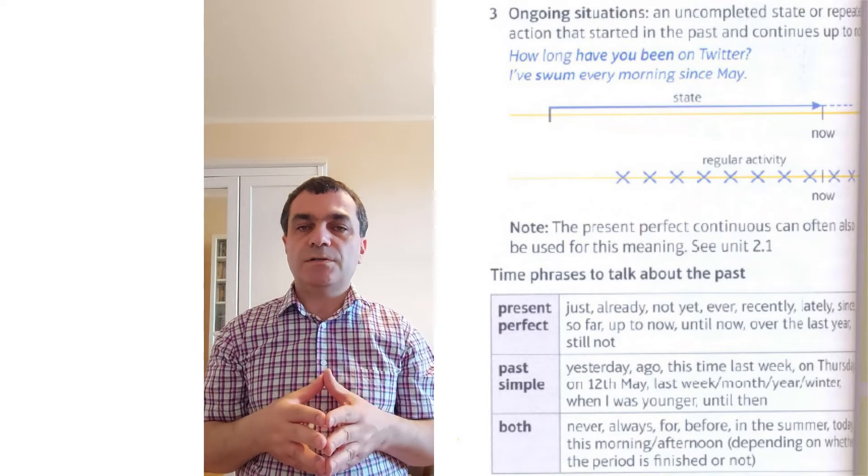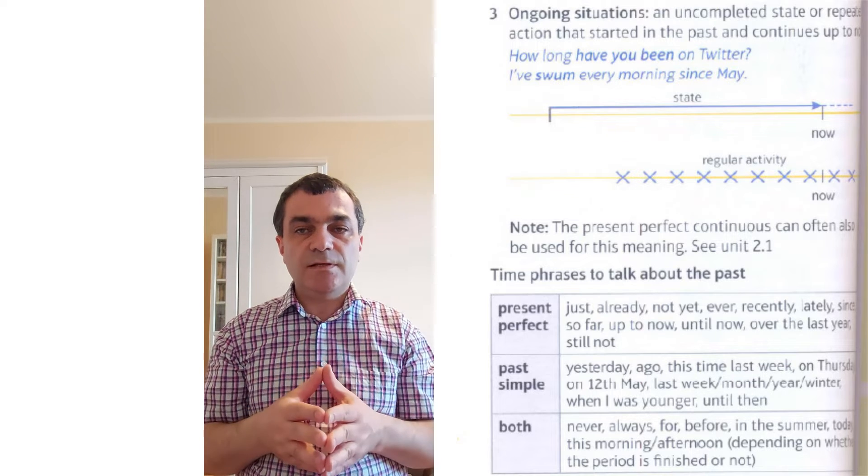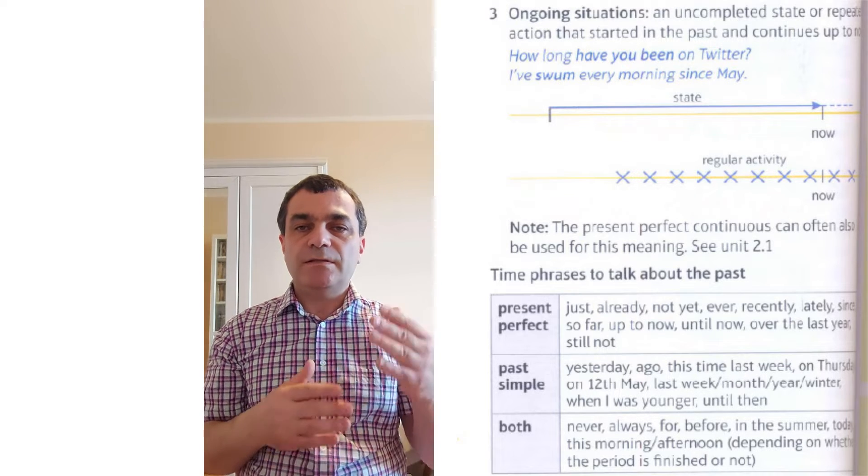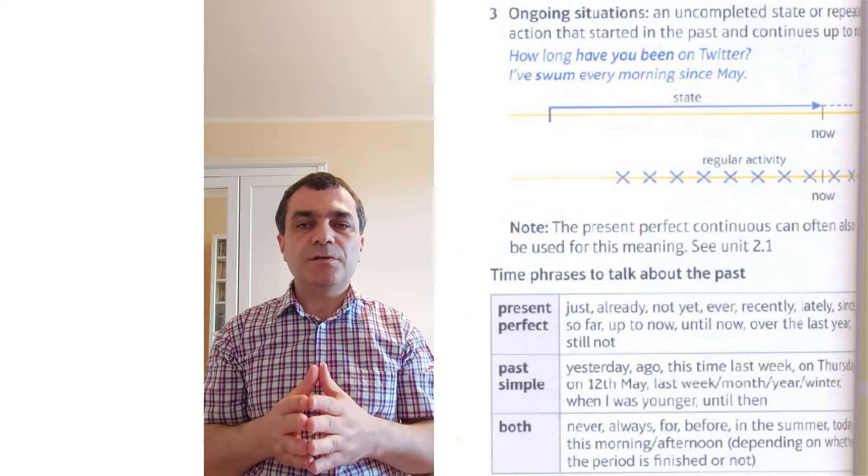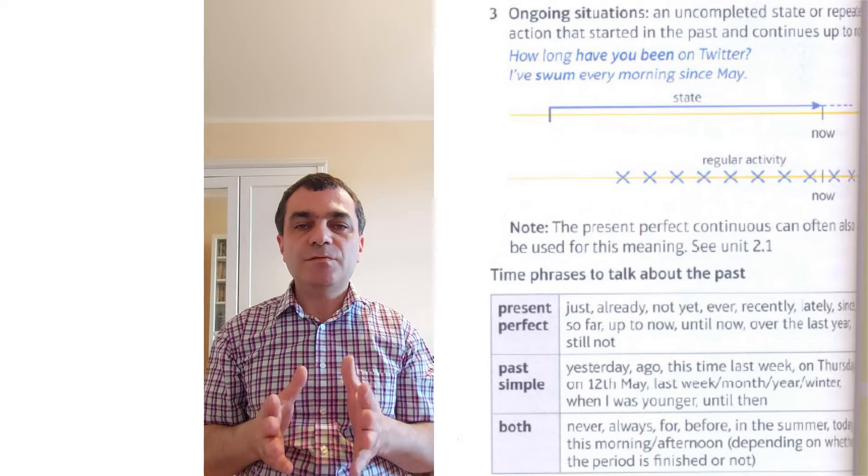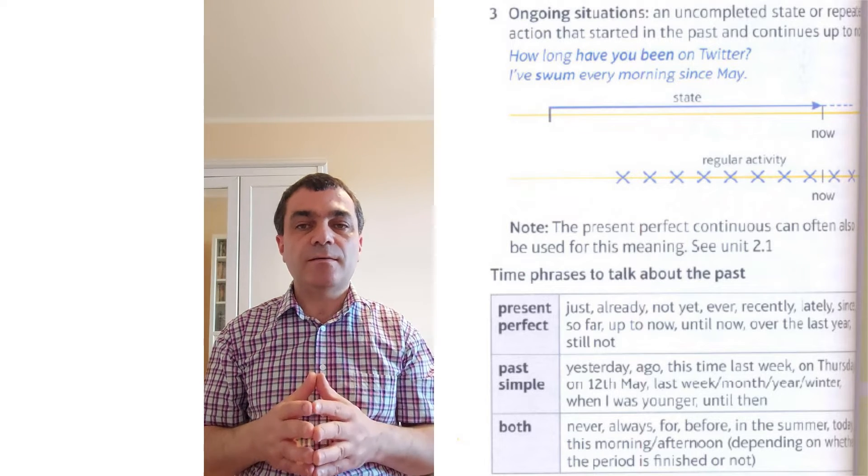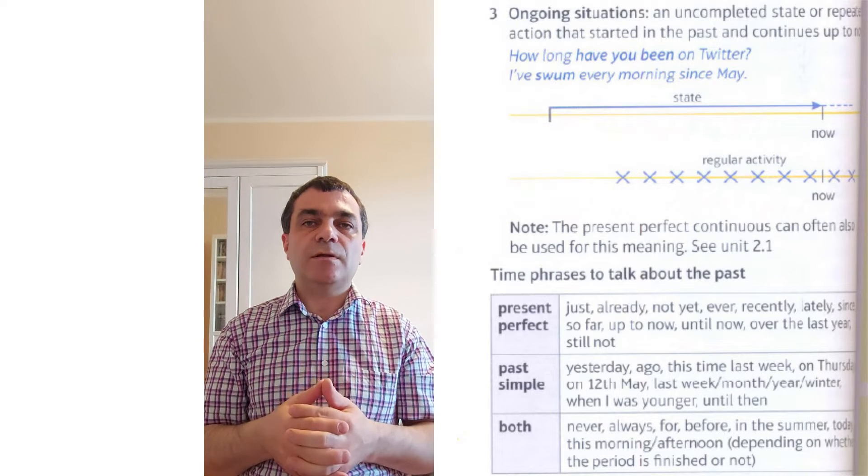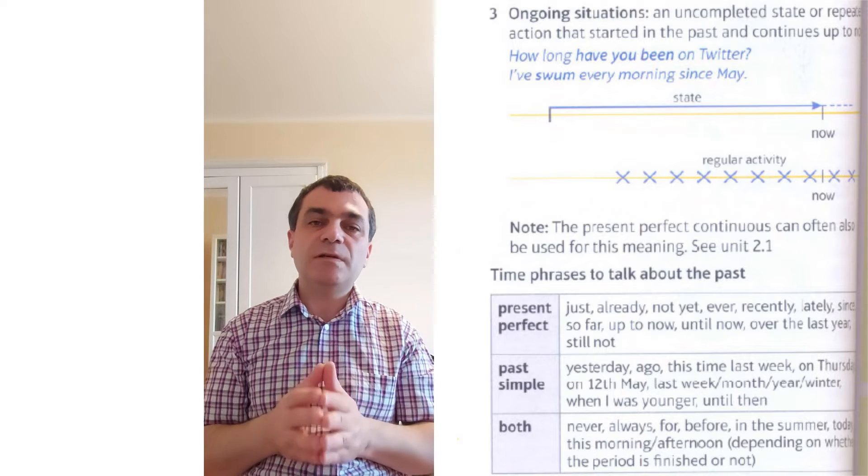Ongoing situations. An uncompleted state or repeated action that started in the past and continues up to now. How long have you been on Twitter? I have swam every morning since May. The present perfect continuous can often also be used for this meaning.